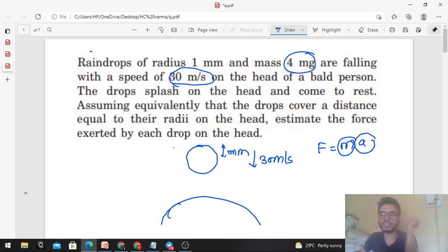Let's talk about acceleration. We have to find the acceleration. For this, we need to determine some parameters like initial velocity, which is 30 meter per second, and final velocity, which is zero at rest.